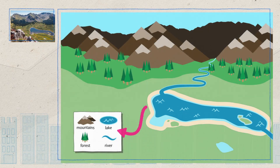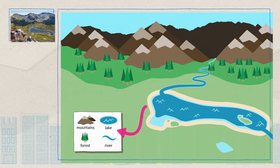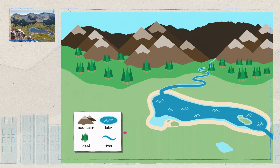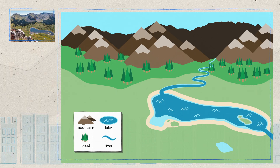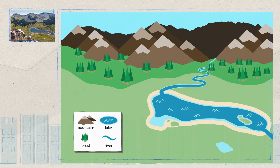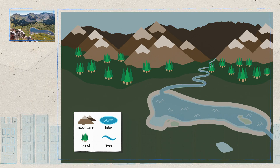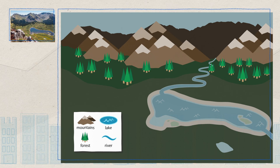Look below the map. You can see that there is a section that shows each symbol and tells what it stands for. This section is called a key. The other symbols in the key are brown and green. These colors are usually used to represent land features. There are mountains behind the lake, and the map uses a brown triangle to represent these mountains.